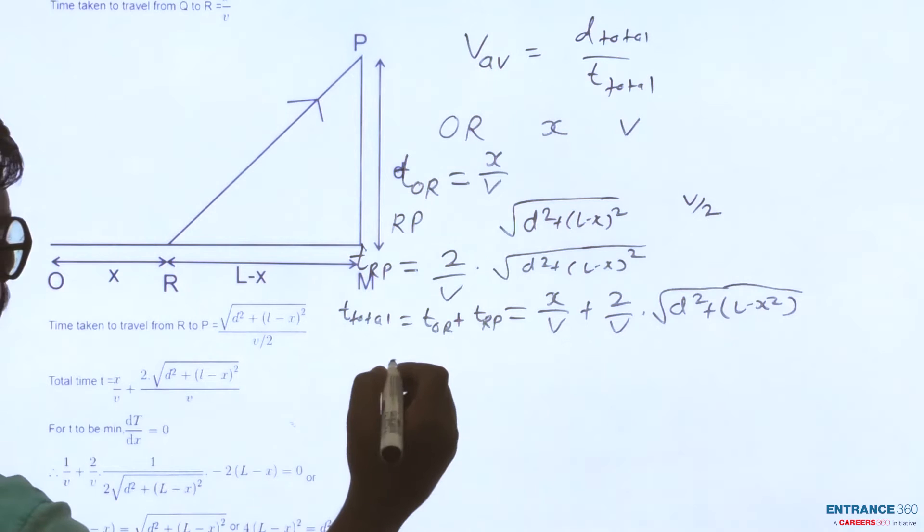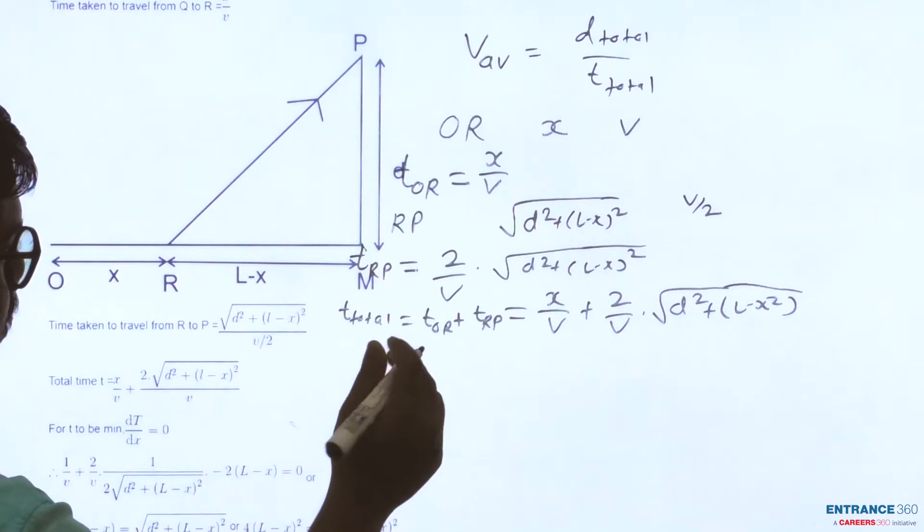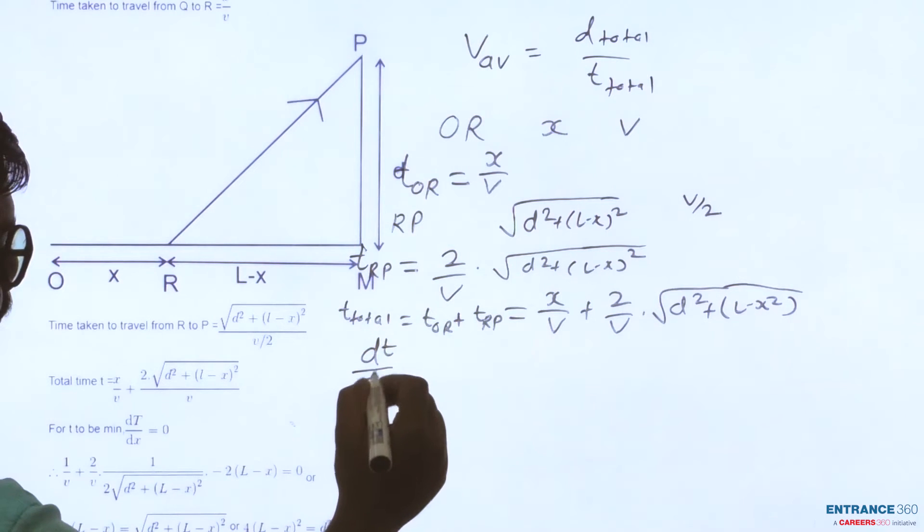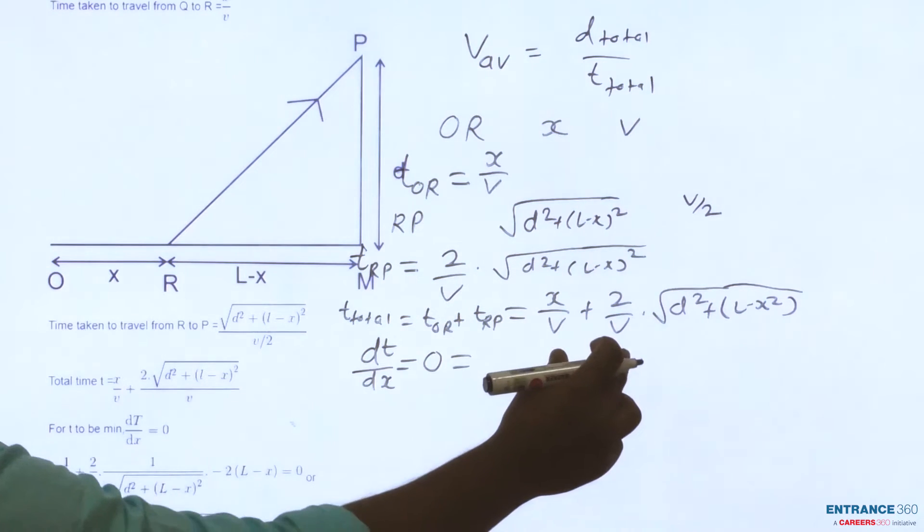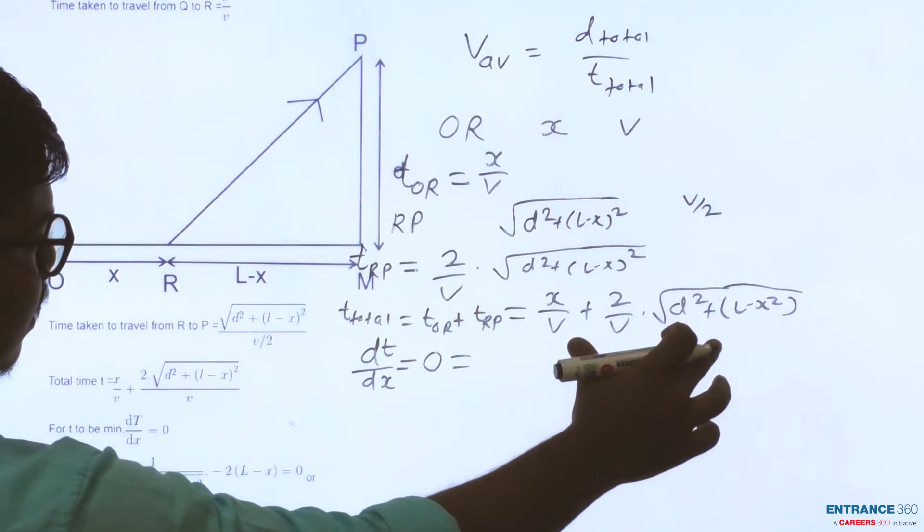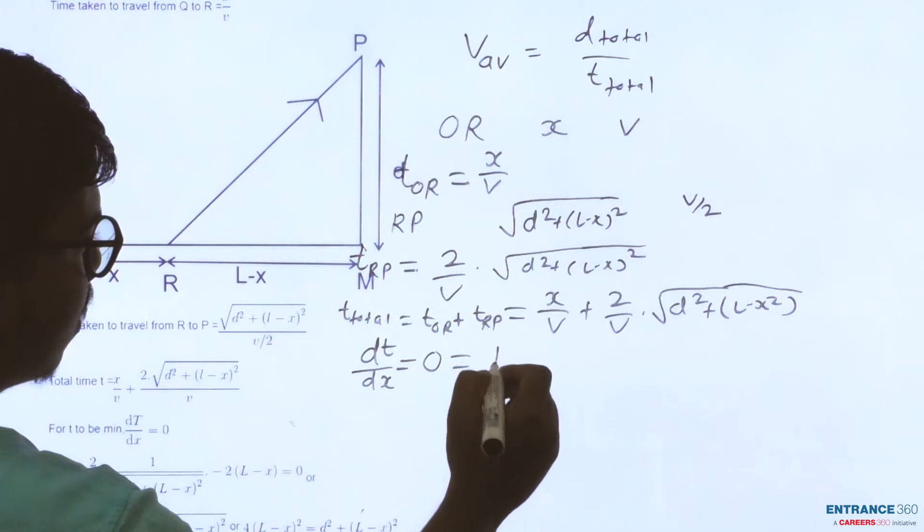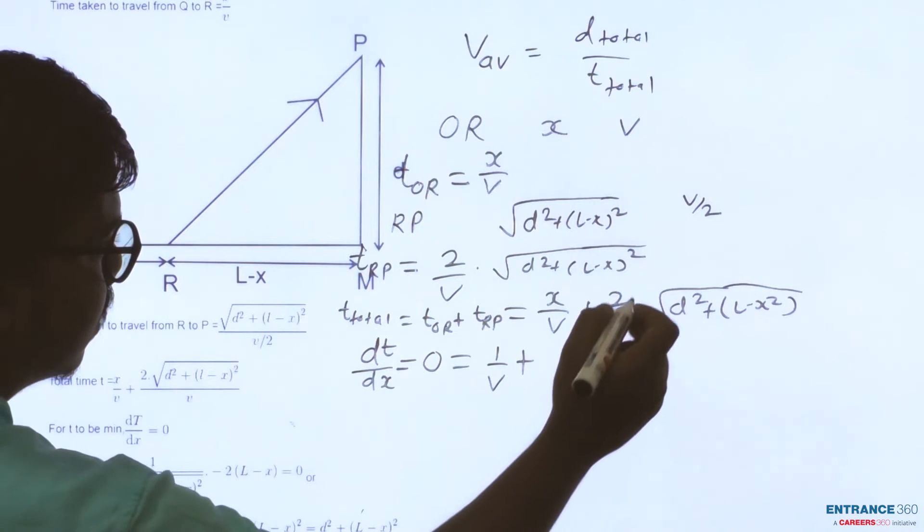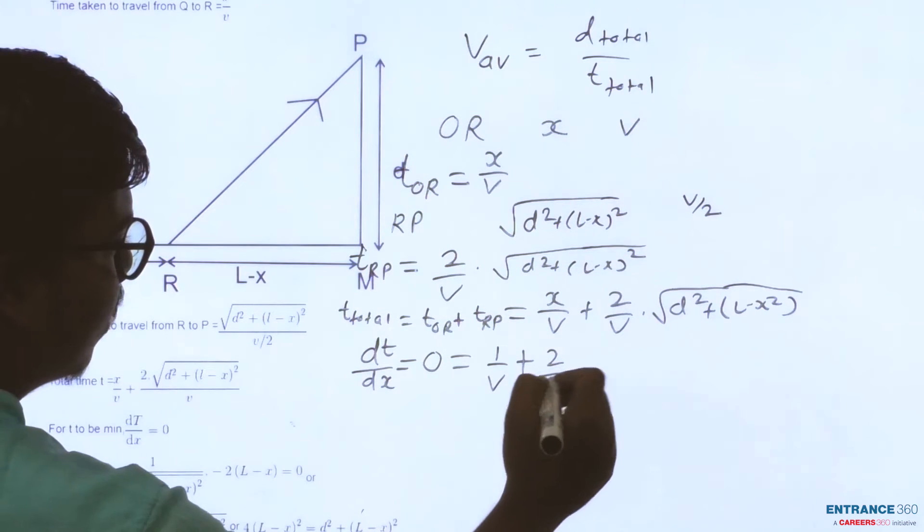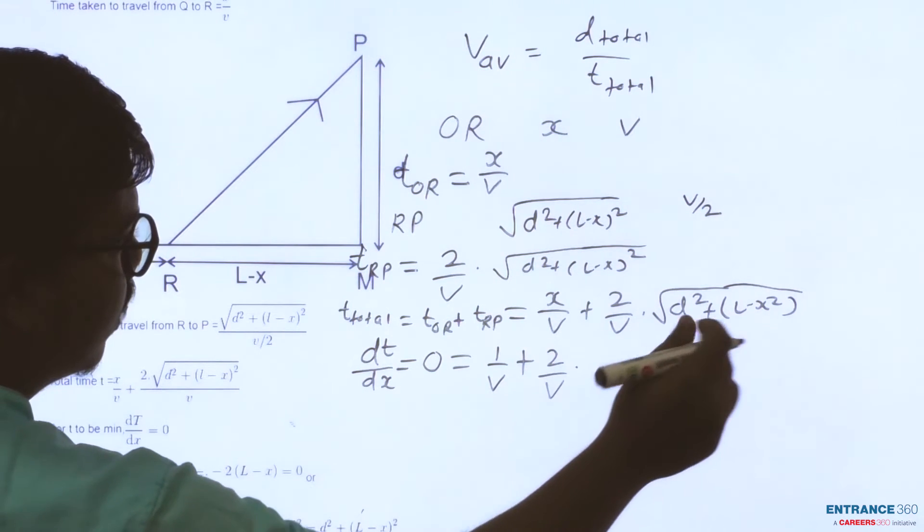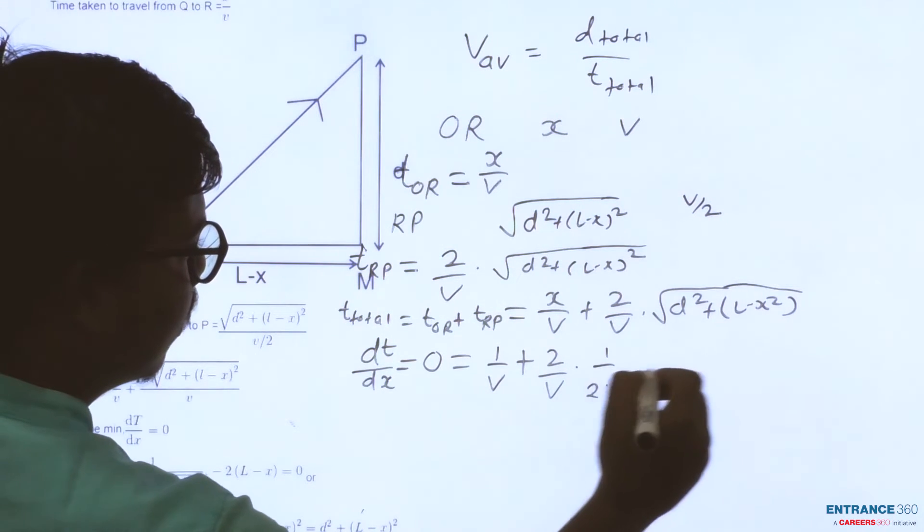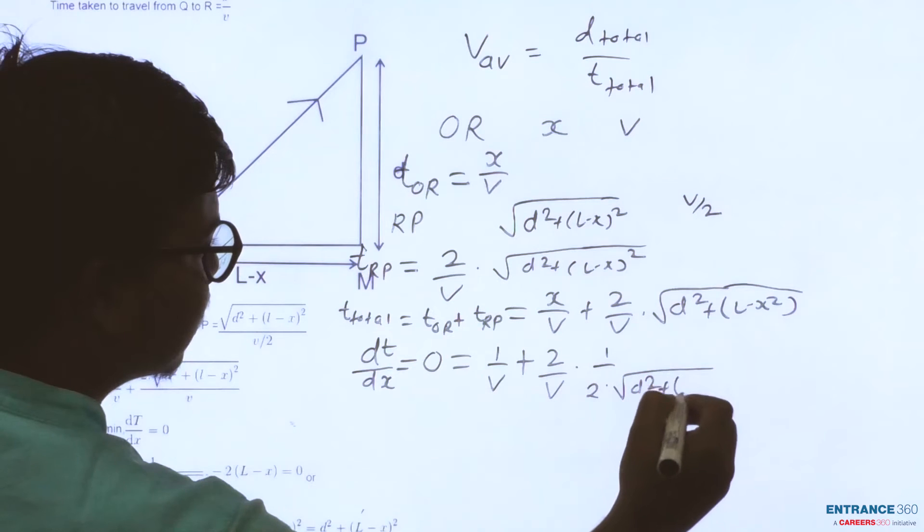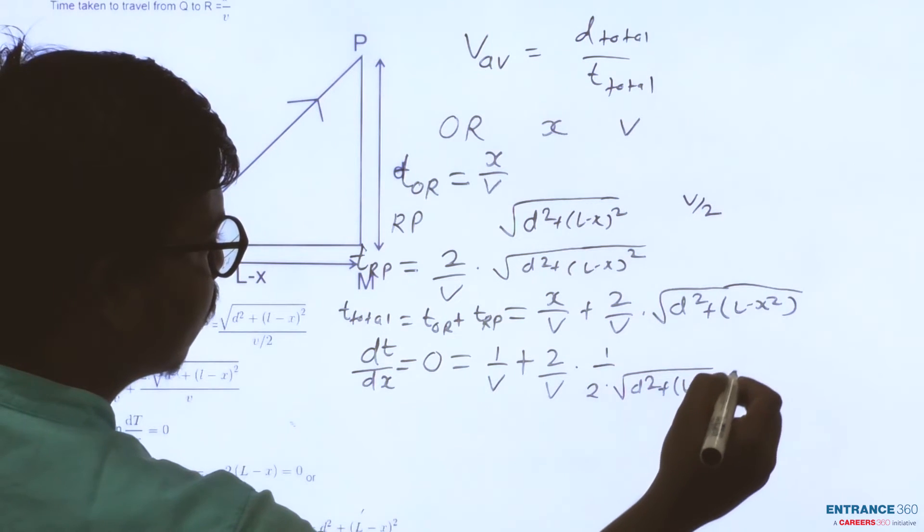dT/dx should equal zero. After differentiating we get 1/V plus 2/V times 1/(2√(D² + (L-X)²)) and we also have to differentiate this quantity.